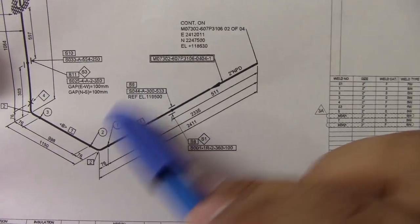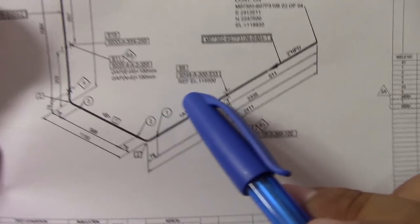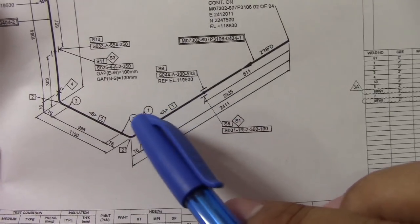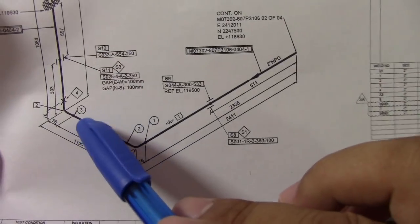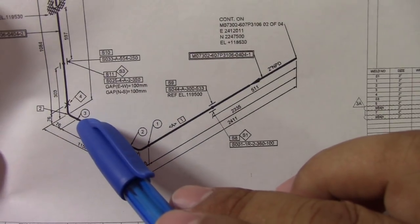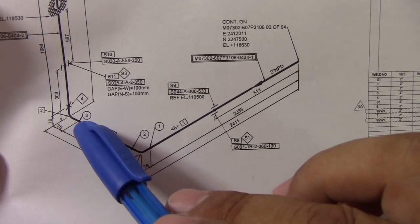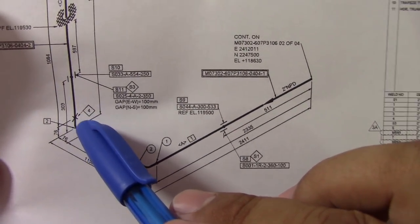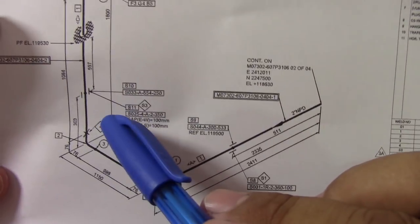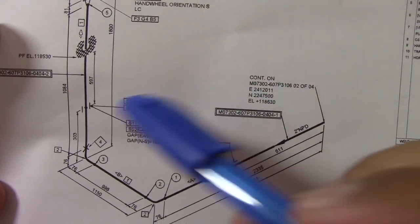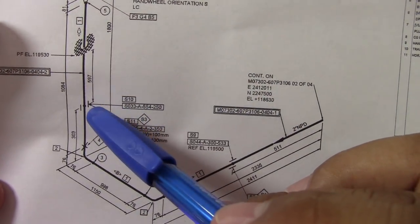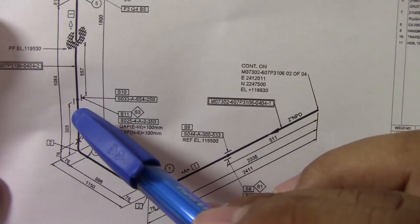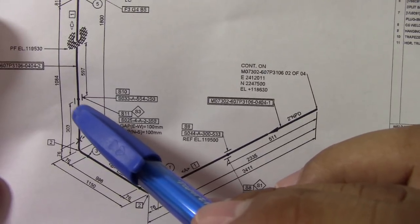Now we check the flange joints. If you see this joint is welded, just put a tick so you are not confused. This flange is ticked, and this is a field weld — tick, tick. So those are confirmed.